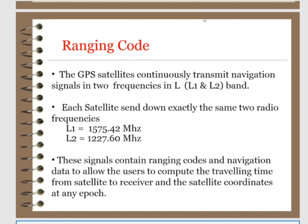In this video we are talking about GPS ranging. GPS satellites continuously transmit navigation signals in two frequencies in the L band. Each satellite sends down exactly the same two radio frequencies, which are L1 and L2. These signals contain ranging codes and navigation data, which allow users to compute the traveling time from satellite to the receiver and the satellite coordinates in any epoch.